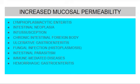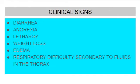Histoplasmosis is a fungal infection that can affect the gastrointestinal system and produce a severe loss of proteins. Parasites like roundworms, hookworms, whipworms, coccidia, and giardia are associated with the loss of protein, especially in puppies. Hemorrhagic gastroenteritis can produce sudden onset of bloody diarrhea and vomiting, mostly in small breeds.